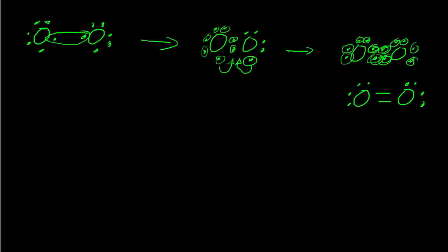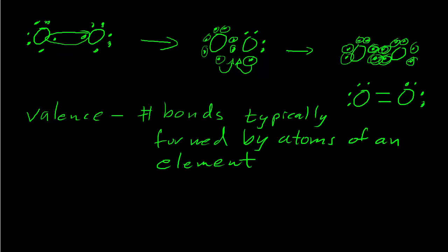The word 'covalent' comes from the word 'valence,' which is the number of bonds formed, and the prefix 'co-' — as in coexist or cooperate — means to come together. Valence is an old idea from chemistry and has always been known as the number of bonds typically formed by an element. It's easy to figure out the valence from a Lewis dot symbol: valence equals the number of unpaired electrons in the Lewis dot symbol.